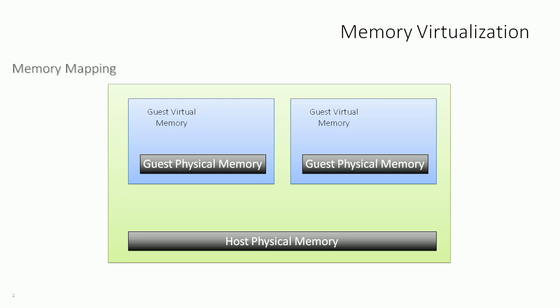Here we see our two virtual machines represented by the blue rectangles, and they're running on the same host, which means they're sharing the host's physical memory with each other. When a virtual machine needs memory and launches an application, the guest operating system allocates what's called guest physical memory to that application — saying, for example, 'I've got four gigs of memory, let me dedicate some to this application.'